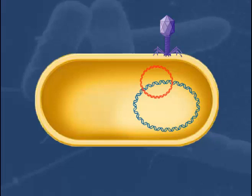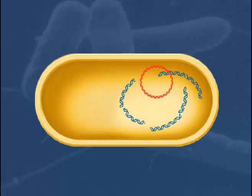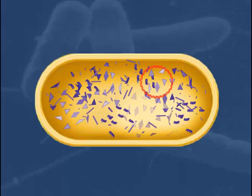Once inside the cytoplasm, genes in the phage DNA direct the degradation of the host cell DNA and are able to utilize proteins within the host cell for the synthesis of new T2 phages.